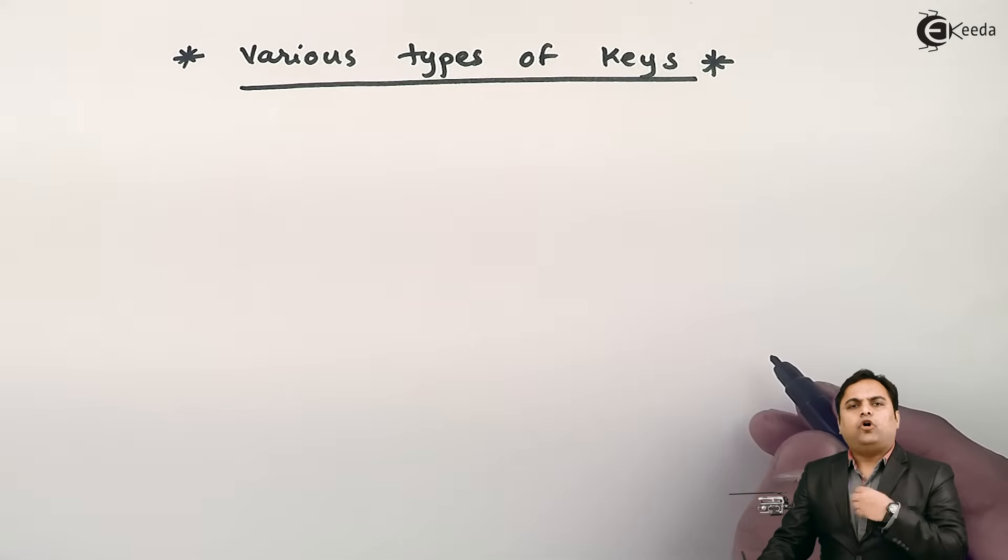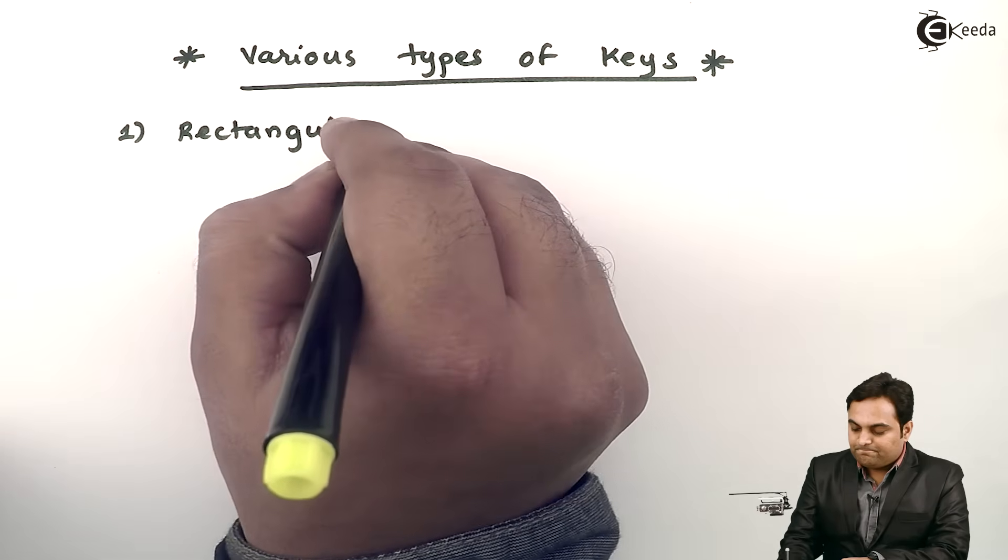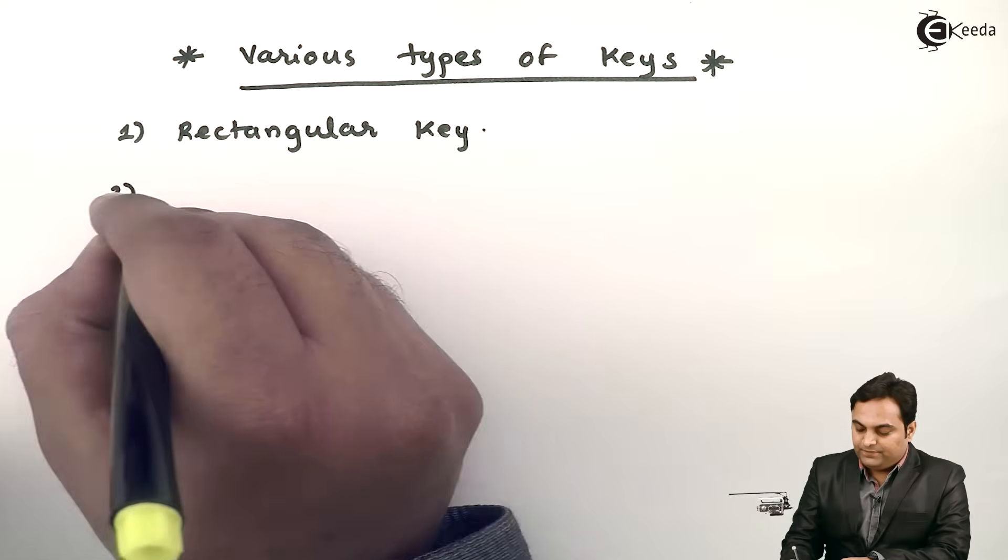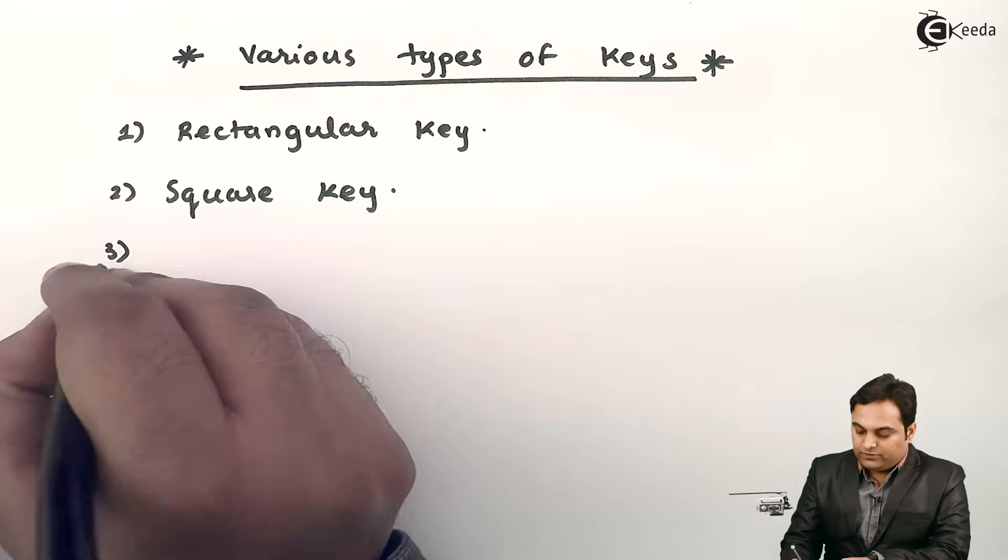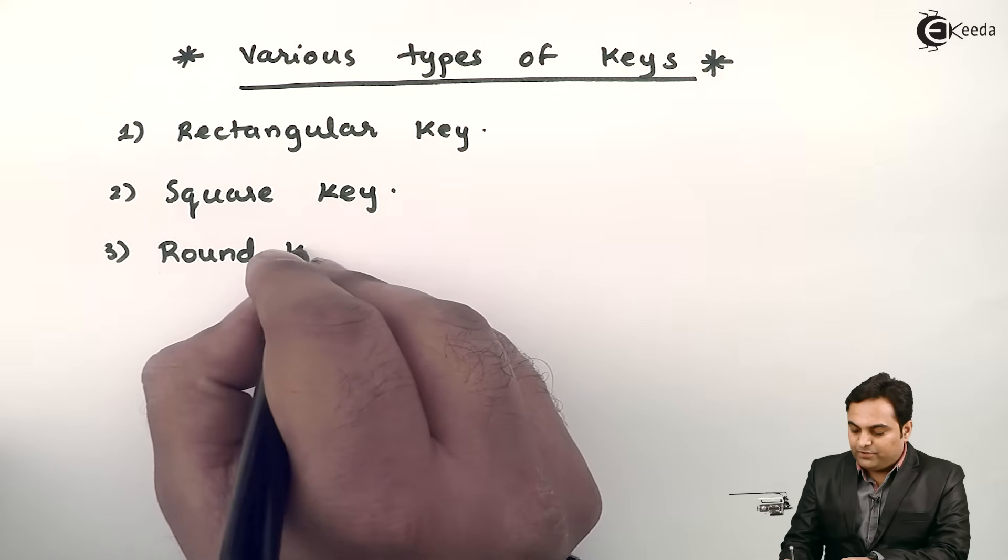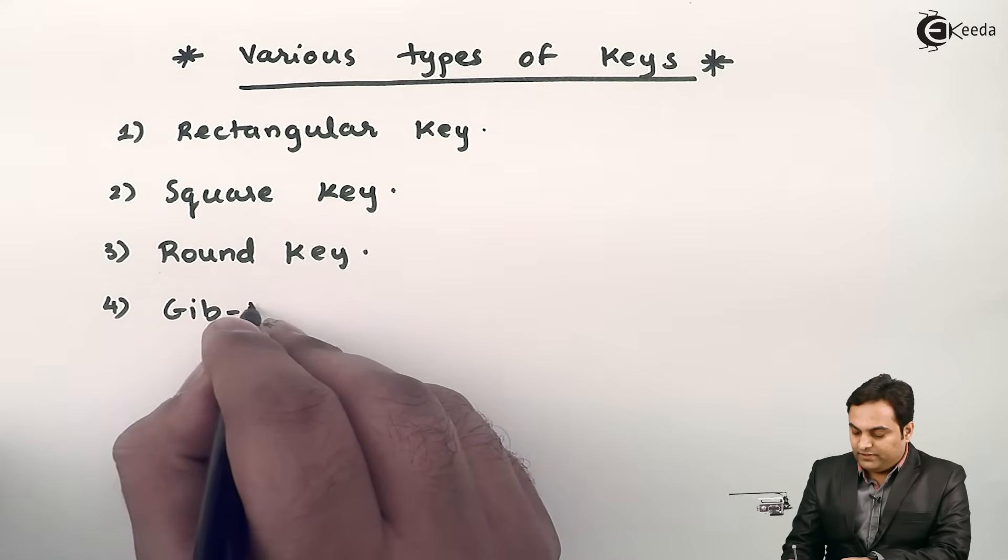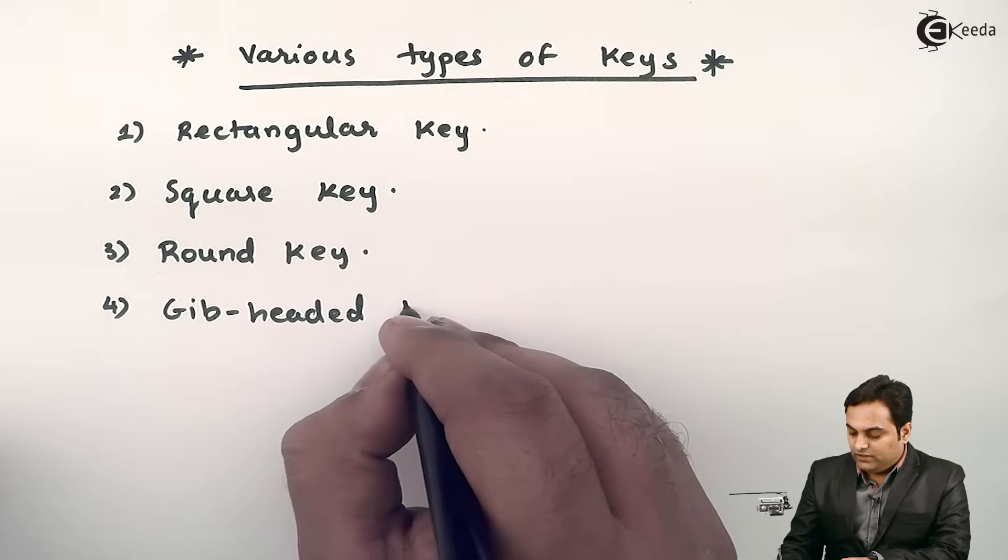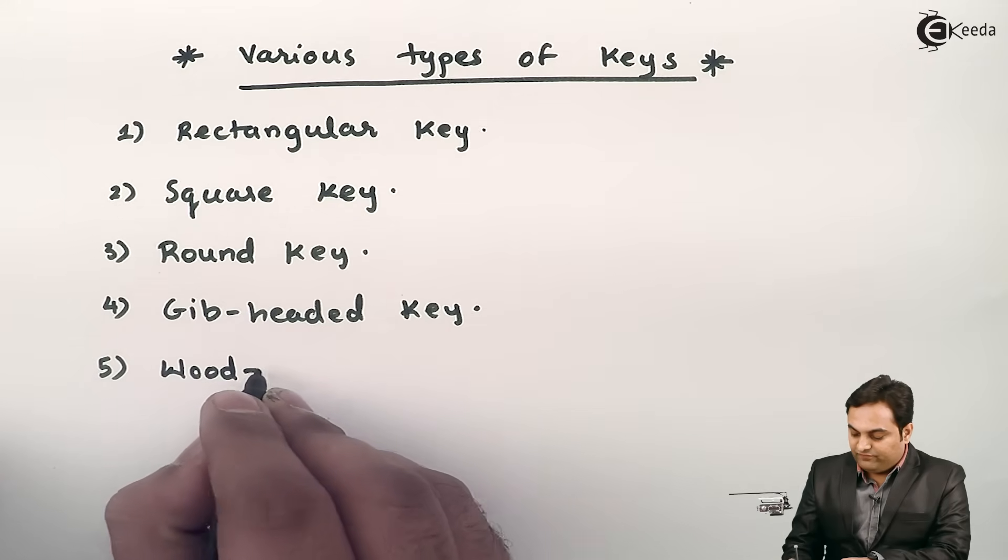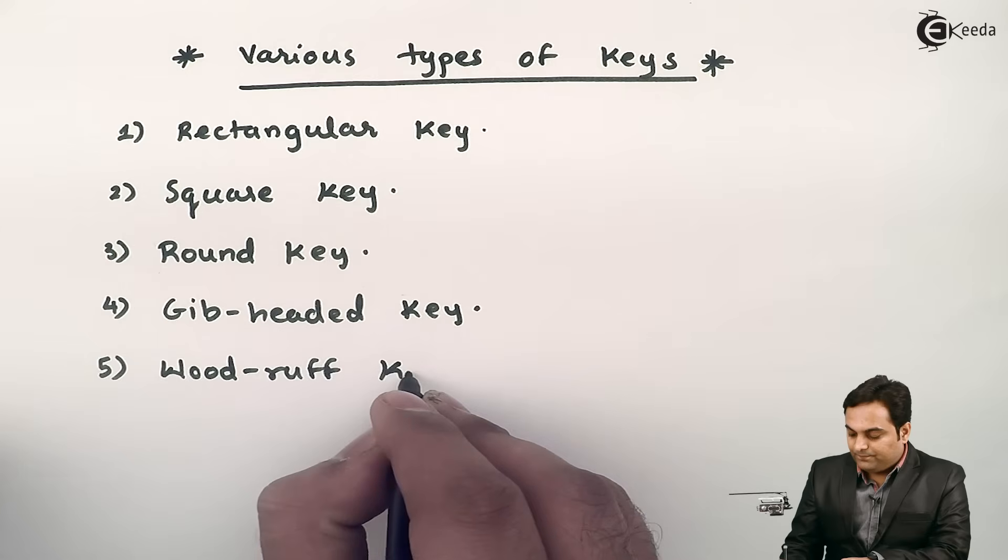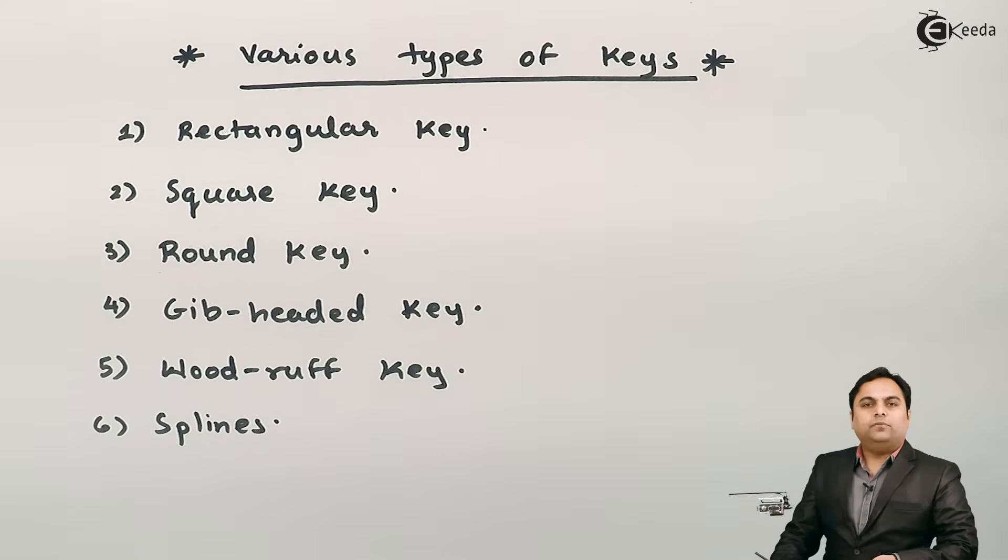So some commonly used types of keys are: first, rectangular key; second, square key; third, round key; next, gib-headed key; then we have Woodruff key; and at last we have splines. So these are some common types of keys which we use.